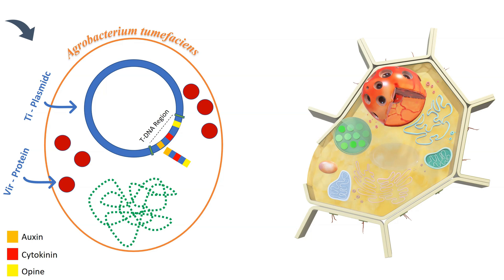On the left you can see the Agrobacterium cell and on the right is the plant cell. In the Agrobacterium cell there is a T-DNA region which controls the overall function, and it includes different genes like auxin, cytokinin, and opine. Note that the plant also has auxin and cytokinin inside it.